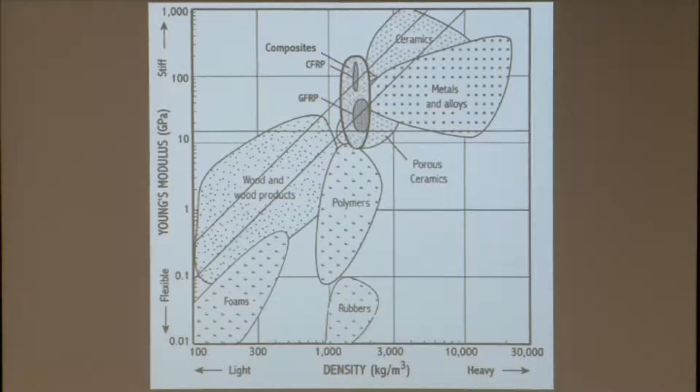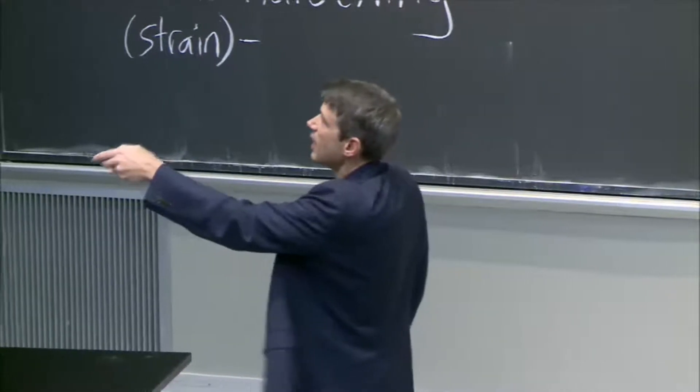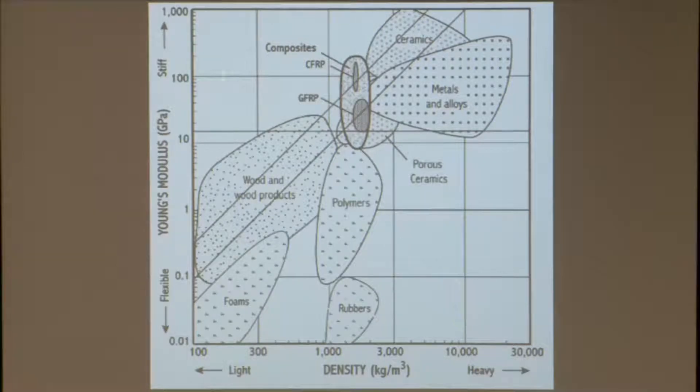Different materials are here. Rubbers, foams. OK, foams have relatively low Young's modulus. But they're really light. That could be good. Up here, you've got metals and alloys, ceramics. You've got polymers in here. But notice, I've got so many different applications and needs in the applications. And I've got this plot where I've got nothing here and nothing here.